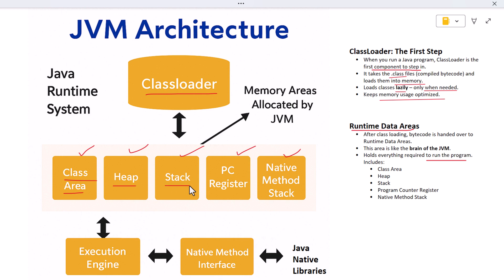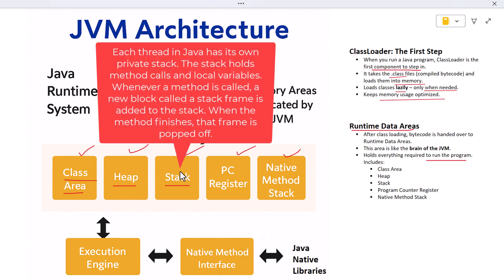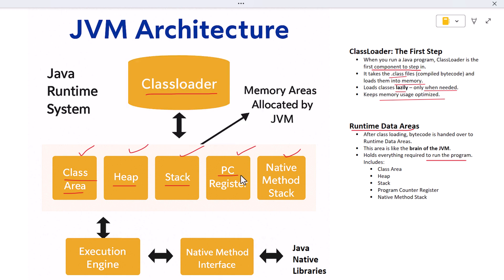Now let's talk about the stack. Each thread in Java has its own private stack. The stack holds method calls and local variables. Whenever a method is called, a new block called a stack frame is added to the stack. When the method finishes, that frame is popped off. Because every thread gets its own stack, stack memory is not shared — that makes it faster and safer for multi-threading.